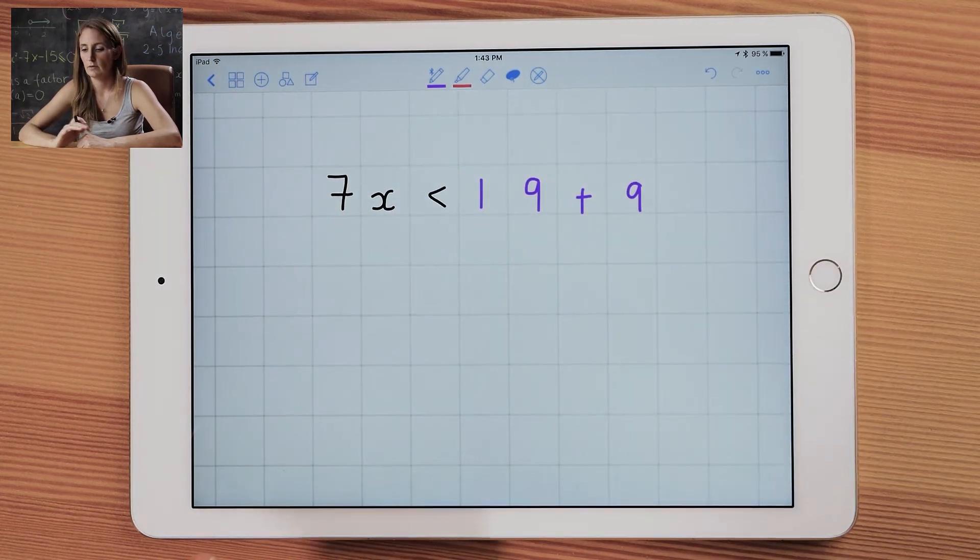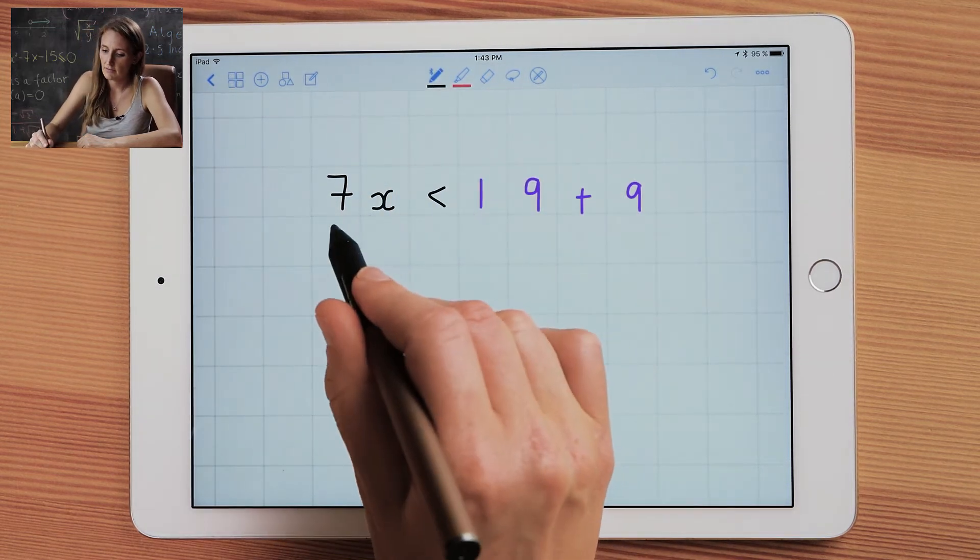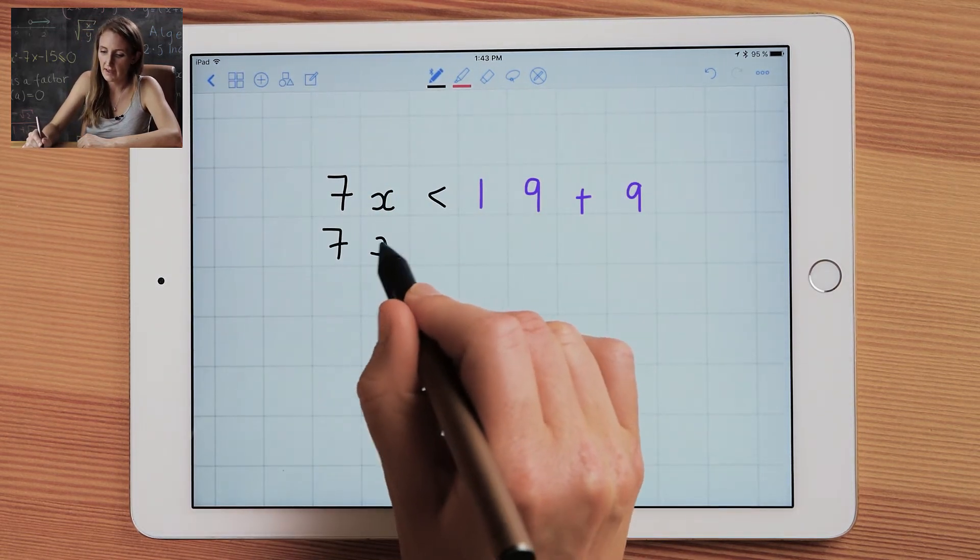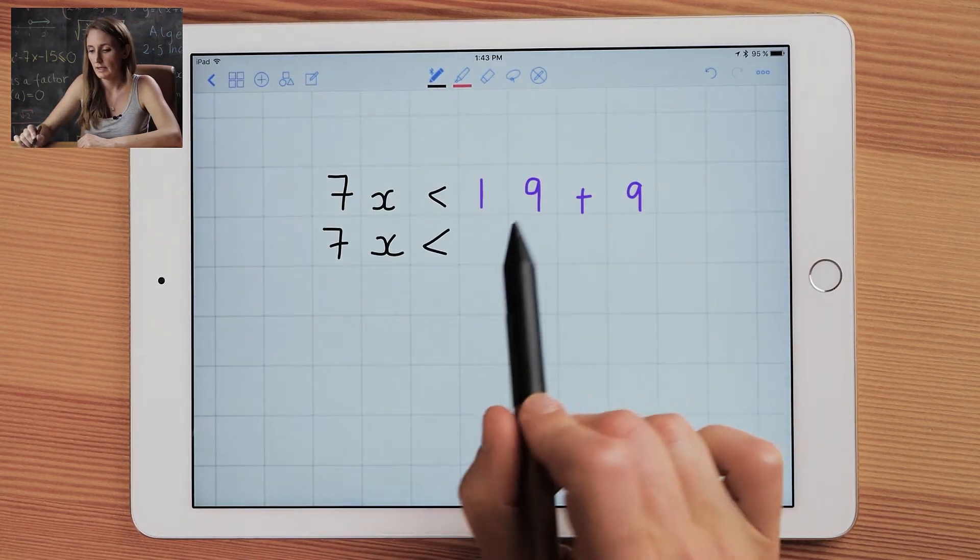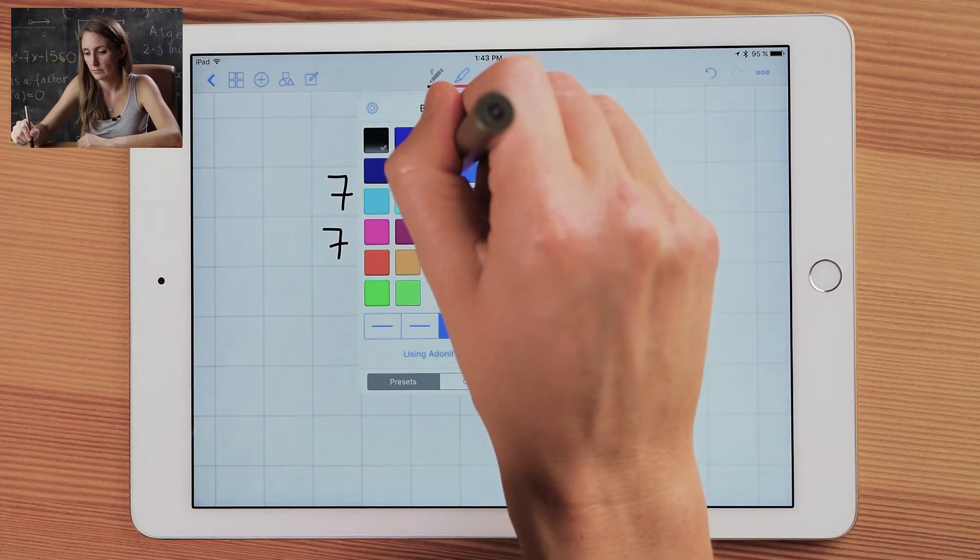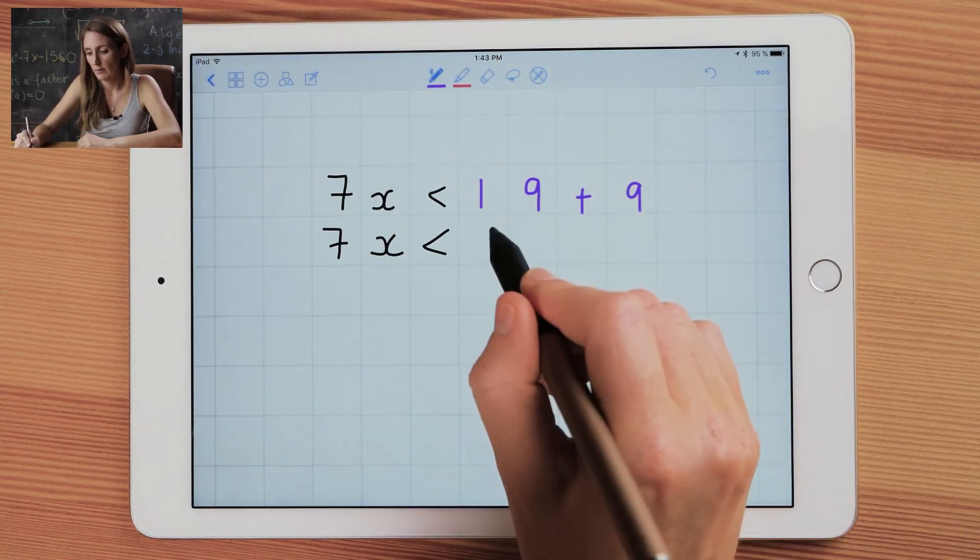The next thing we need to do is add up all of our like terms. So there's only a 7x so there's nothing to add. There's no other x's that we can add to that. But we can add 19 to 9, and that will give us 28.